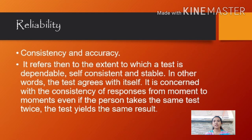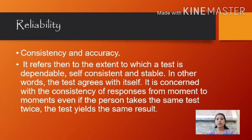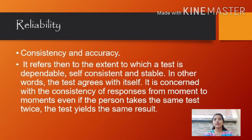What is reliability? It means consistency and accuracy. It refers to the extent to which a test is dependable, self-consistent, and stable. In other words, the test agrees with itself. It is concerned with the consistency of responses from moment to moment. Even if a person takes the same test twice, the test yields the same result. Reliability shows how trustworthy the score of the test is. If the collected data shows the same results after being tested using various methods and sample groups, the information is reliable. For example, if you weigh yourself on a weighing scale throughout the day, you'll get the same results — reliable results obtained through repeated measures. Similarly, if a teacher conducts the same math test and repeats it next week with the same questions and gets the same score, the reliability of the test is high.